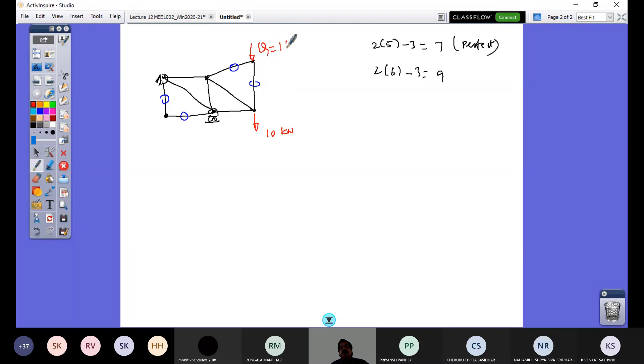Load Q, say I'm 15 kilonewton. So when I put this load here, what would happen? This is not going to be zero force member. This is only going to be zero force member, because this is a joint with three members and two are collinear. The one which is not collinear becomes zero force member. So like this, you should be able to identify zero force members.